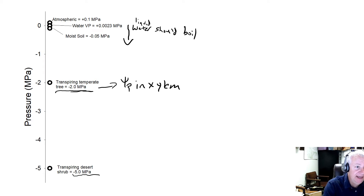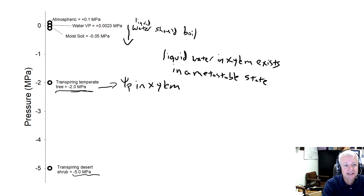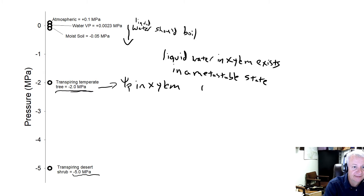What that means is: we know the water in xylem is liquid. So liquid water in xylem exists in a metastable state. In other words, due to its pressure, it should be gas, but it's not — it's liquid. And there are a couple of reasons for that. So how is water maintained in that metastable state?